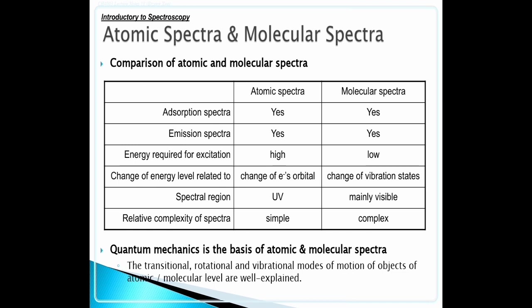Energy required for excitation: atomic spectra high, molecular spectra low. Change of energy level related to: change of electron's orbital in atomic spectra, change of vibration states in molecular spectra. Spectral region: atomic spectra UV, molecular spectra mainly visible. Relative complexity of spectra: atomic spectra simple, molecular spectra complex.